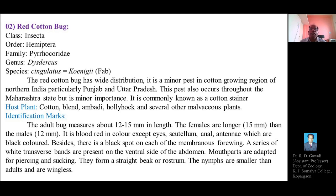The red cotton bug has a wide distribution. It is a minor pest of the cotton-growing regions of North India, particularly Punjab and Uttar Pradesh. This pest also occurs throughout Maharashtra, but it is of minor importance. It is commonly known as the cotton stainer. The host plants of the red cotton bug are cotton, bhendi, ambadi, hollyhock, and several other Malvaceous plants.